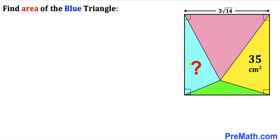Welcome to pre-math. In this video we have a square that has been divided into four triangles, such that the area of the yellow triangle is 35 centimeter square. Moreover, the side length of this square is three times the square root of 14 centimeters, and we are going to calculate the area of the blue shaded triangle.